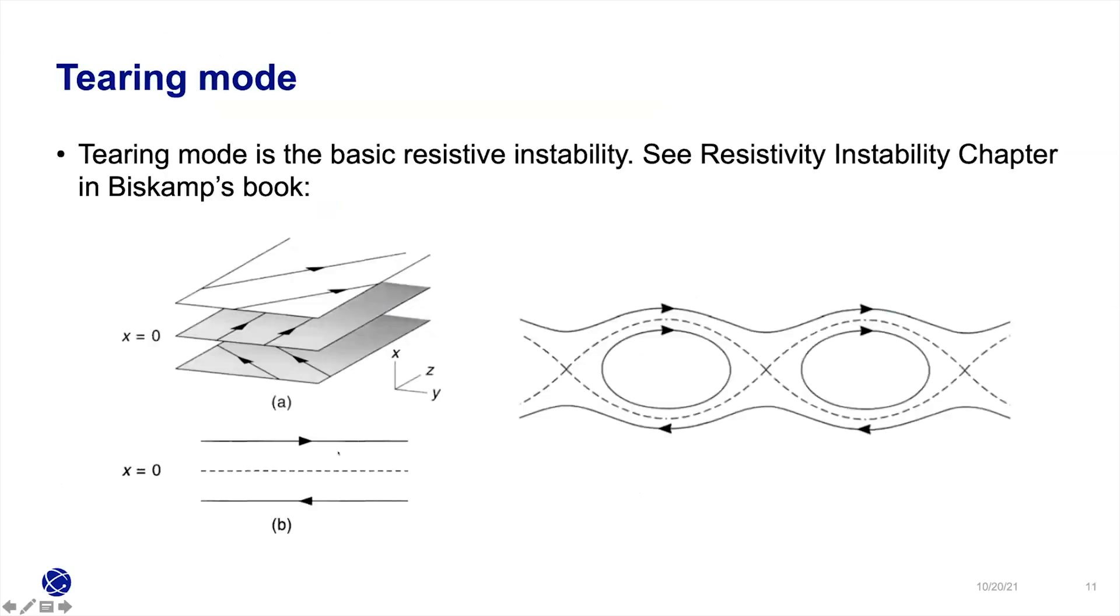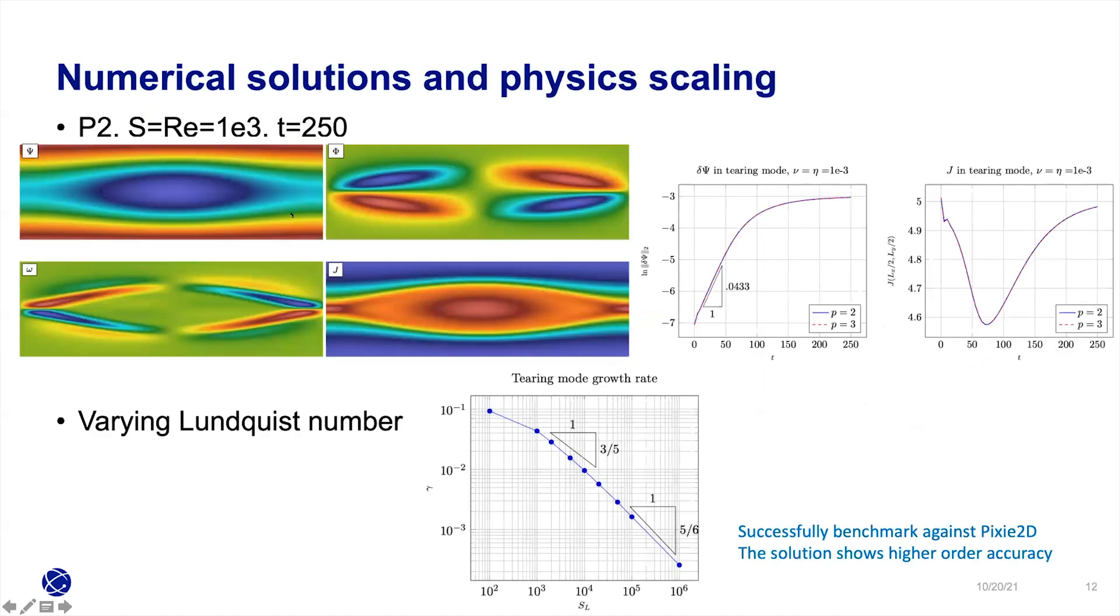I'll show some quick results. The first one is called a tearing mode result. Basically, you have different directions of this initial magnetic field, and it's not stable, so they will form these islands. This is resistive instability. It takes a very long time to develop, and we have the solver to simulate the same problem forming this cat-eye structure.